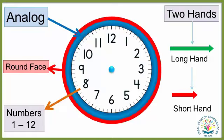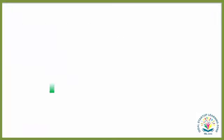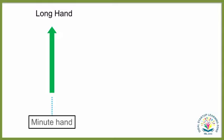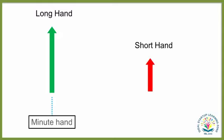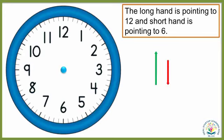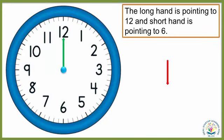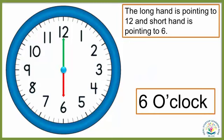The long hand tells the minute, so it is called the minute hand. The short hand tells the hour, so it is called the hour hand. When the long hand is pointing to 12 and the short hand is pointing to 6, it is 6 o'clock.